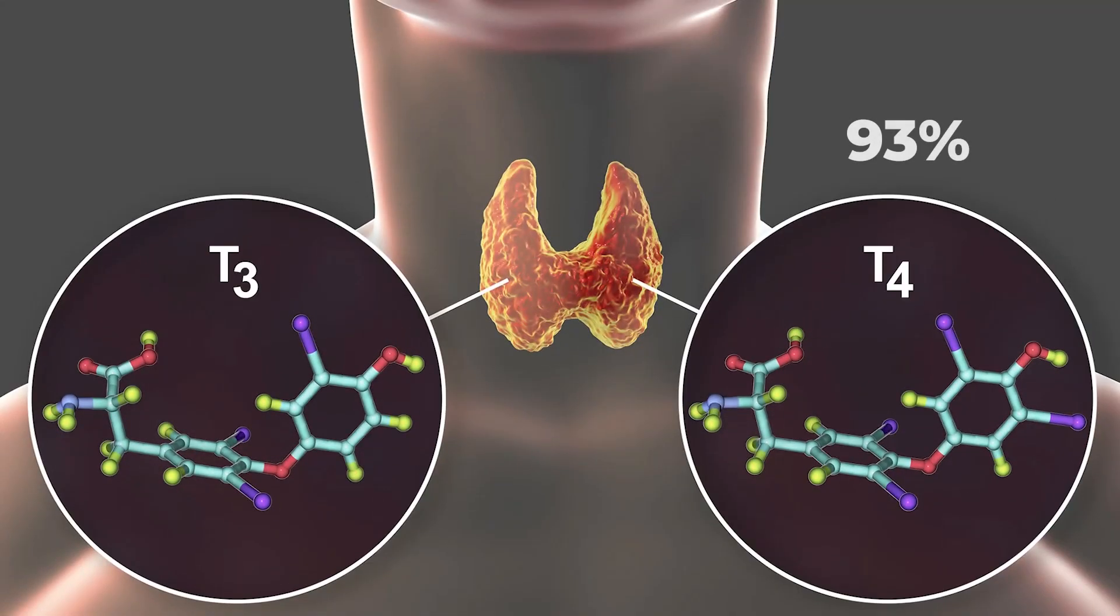So first of all, what is your thyroid? Well, it's a shield-shaped organ sitting right here in the front of your neck. And the word thyroid actually means shield in Greek or ancient Greek. So what your thyroid does is it makes a hormone, and we call it T4. Now, 93% of what it makes is T4. 7% of what it makes is called T3. T3 is actually the active form of the hormone.